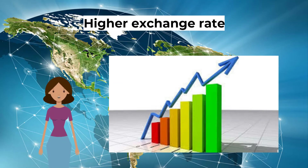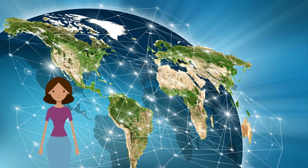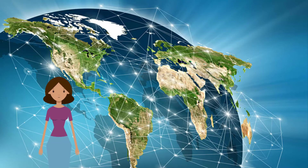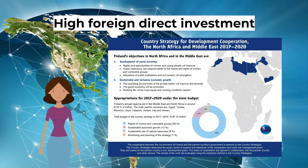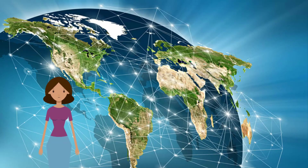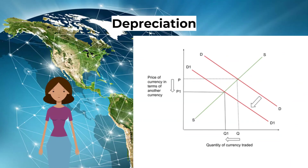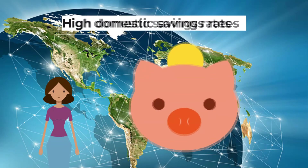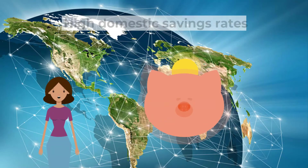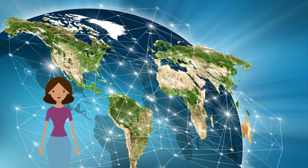What are the causes of a current account surplus? Improved competitiveness: exports have become more price competitive in the international market, perhaps due to better labour productivity or low prices. Growth in foreign countries: export demand may have risen due to trading partners experiencing growth and higher incomes. High foreign direct investment: strong export growth can result from a high level of foreign direct investment. High domestic savings rates: high levels of domestic savings and low domestic consumption cause more products to be exported and imports to fall.